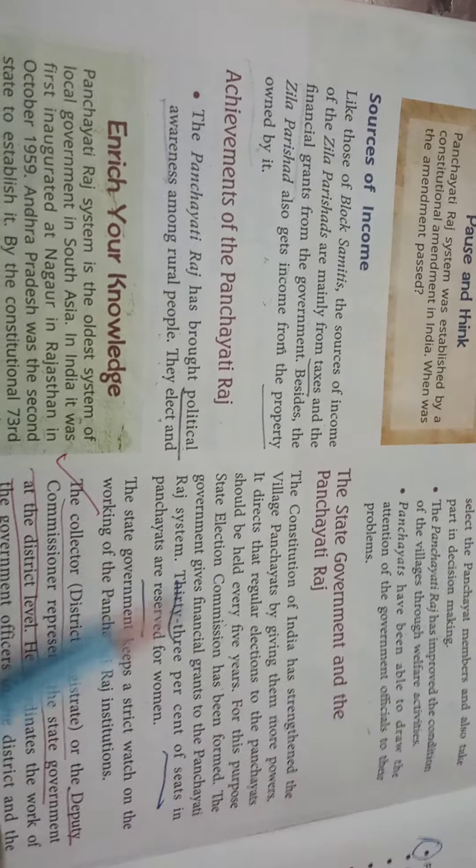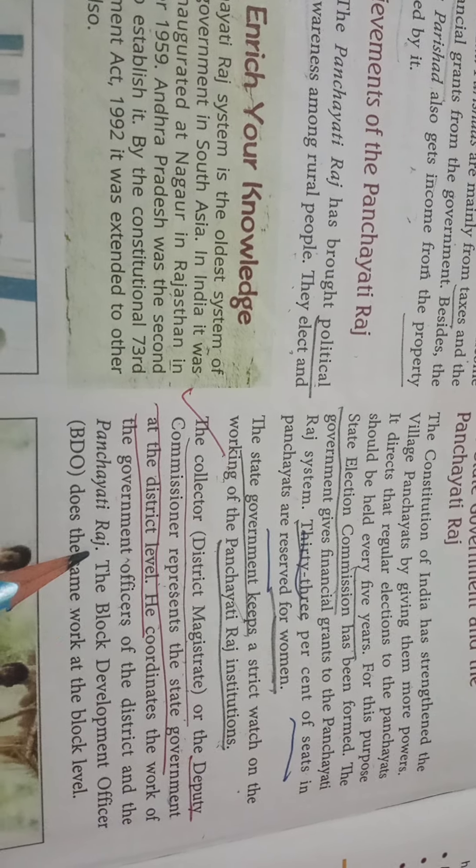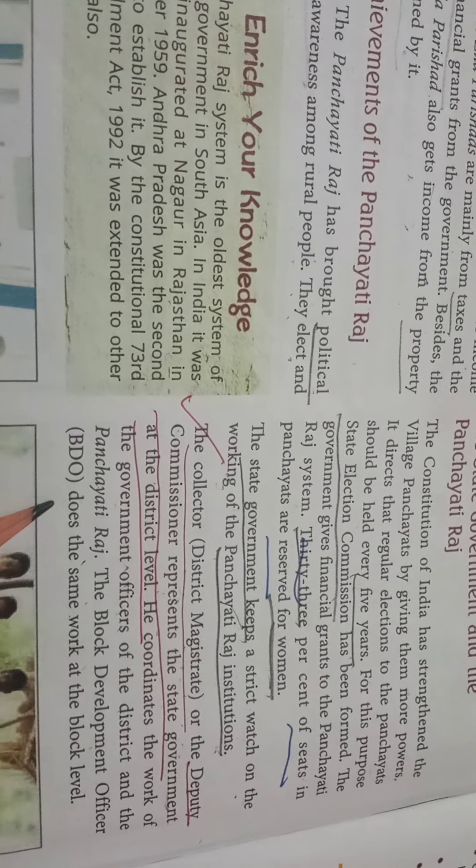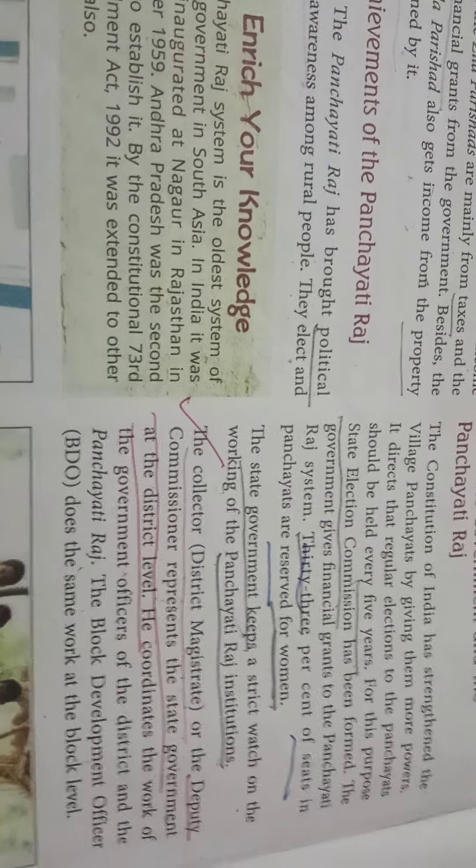Coming on to the sources of income. Like those of Bloxamithis, the sources of income of the Zilla Parishads are mainly from taxes and the financial grants from the government. Whatever taxes are collected from the public and the financial grants provided by the government — that is the basic source of income. Besides, the Zilla Parishad also gets income from the property owned by it.